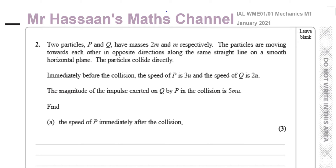Find first the speed of P immediately after the collision. So let's make a little diagram first. We've got particle P and Q — two particles, P and Q. They're going towards each other on a straight line. So I'm going to draw particle P here and particle Q here. So this is P and this is Q. The mass of P is m and the mass of Q is 2m.